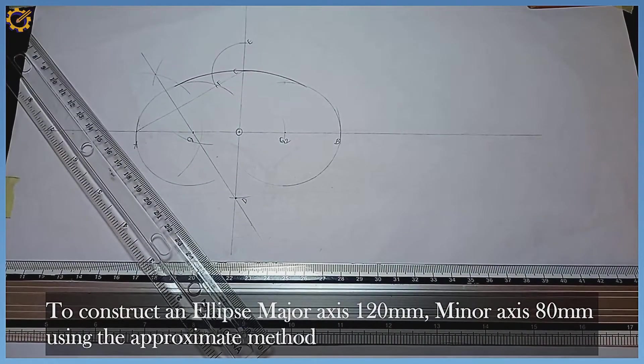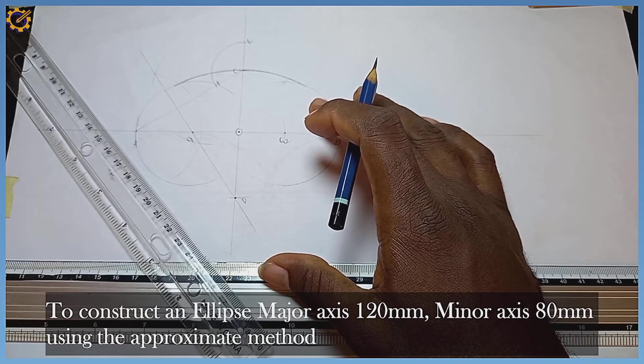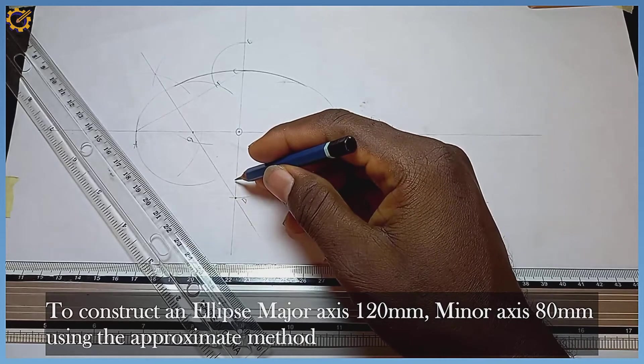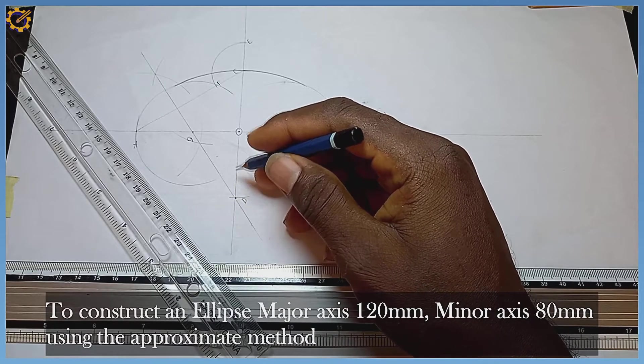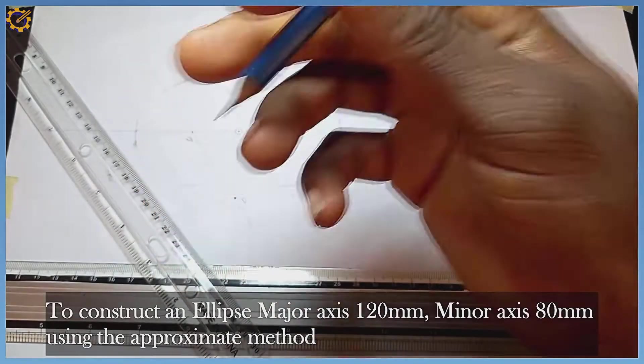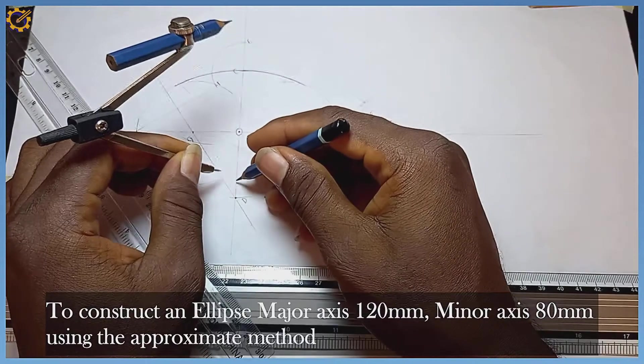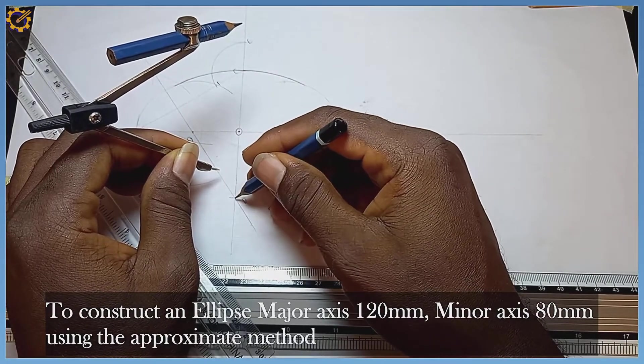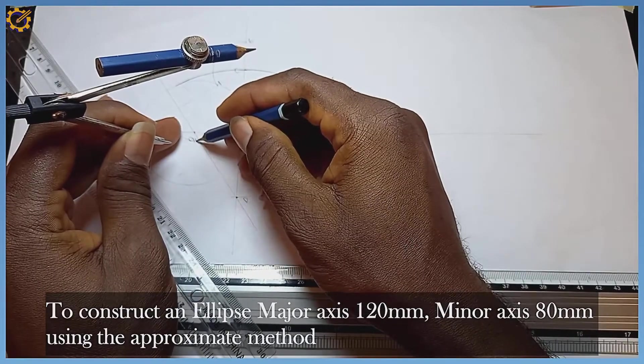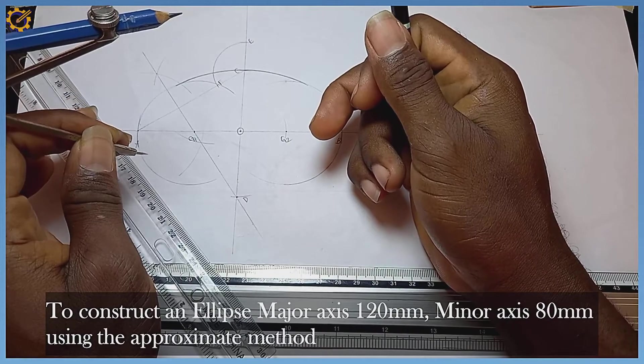I want you to take note of something: if the dimension for your minor and major axis differs from what you use, your bisector might touch your vertical line maybe at the bottom of D or at the top, so don't get it wrong. This is just a coincidence that it's touching at point D. Wherever your bisector touches the vertical line, that is where you place your compass and extend it to point C to draw the first one, then replicate that distance on the upper part.